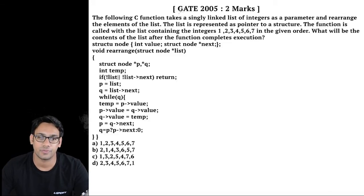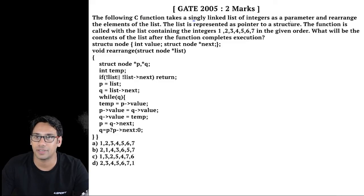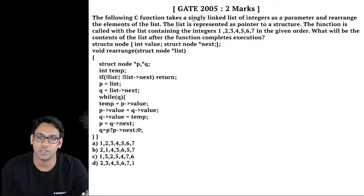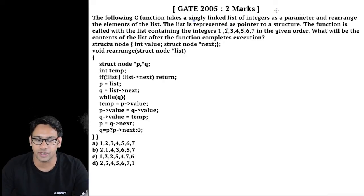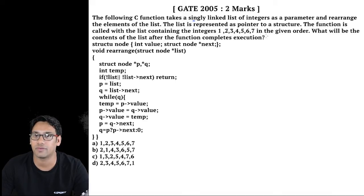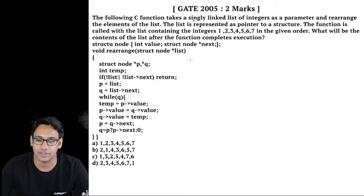This question was asked in GATE 2005. The question involves C functions that take a singly linked list of integers as a parameter and rearrange the elements of the list. The function is called with the list containing the integers 1, 2, 3, 4, 5, 6, 7 in the given order. The question asks: what will be the content of the list after the function is completely executed?